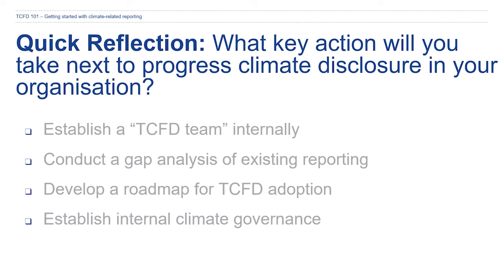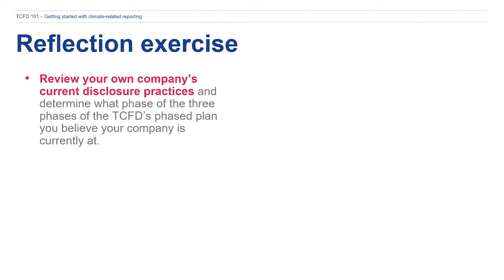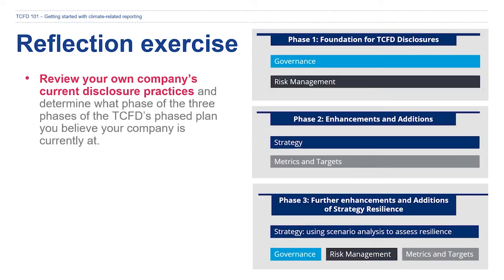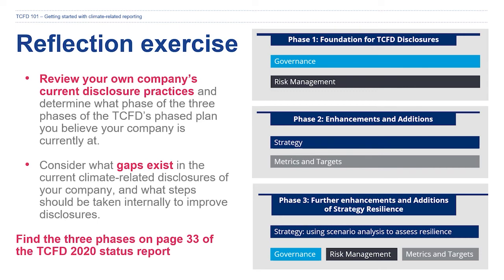I hope you found a starting point for your organization. There's no right or wrong answer here — whatever you choose is a great way to start your disclosure. Now let's reflect a bit deeper in our reflection exercise. Take a moment to review your own company's disclosure practices and determine what phase of the three phases of the TCFD's plan your company is currently at. You can find these three phases on page 33 of the TCFD's 2020 status report. Review the recommended disclosures under each phase, consider what gaps exist in your current climate-related disclosures, and think about what steps should be taken internally to improve them.